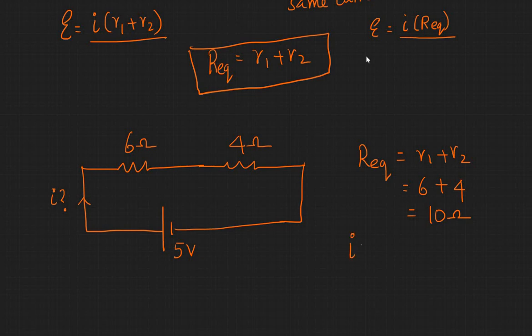And your i will be equal to e by R equivalent, that's 5 volts divided by 10 ohms, that's 0.5 amperes.